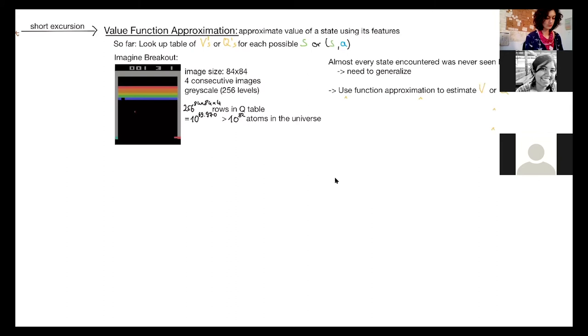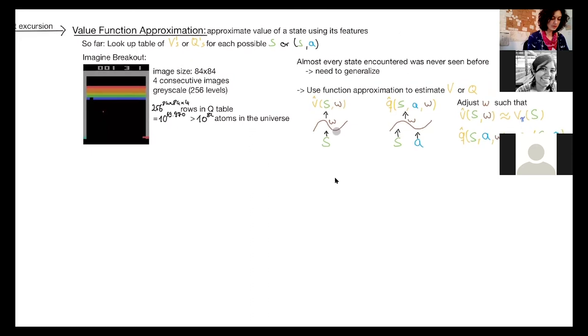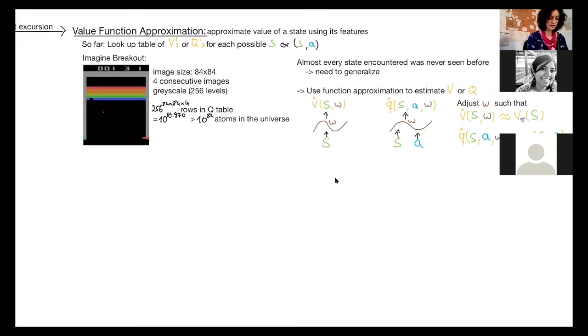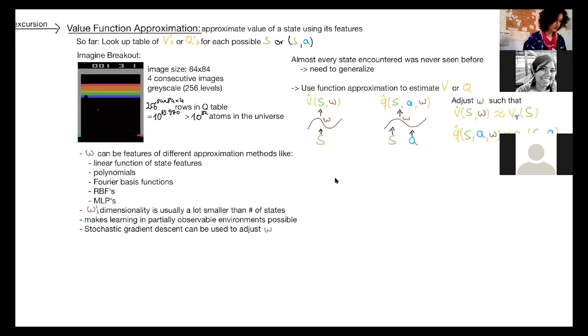And to generalize, we can use functional approximation to estimate V and Q. And the idea is to basically have a function with parameters W, which takes as an input either the state or state in action, and it outputs a value estimate for this. And those should approximate, of course, the actual value function or Q value function.